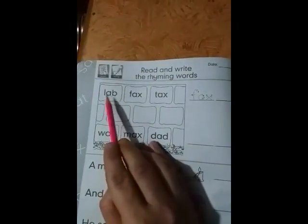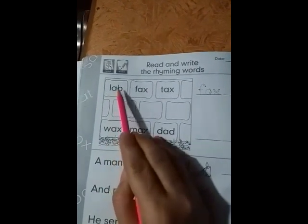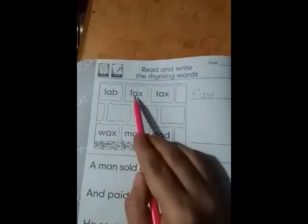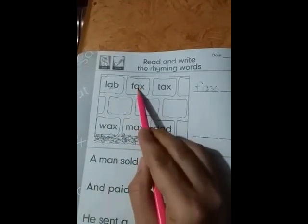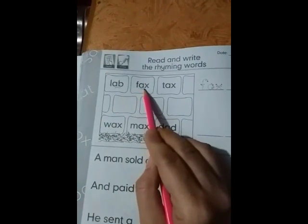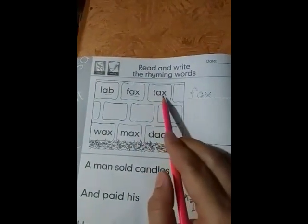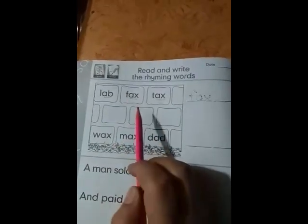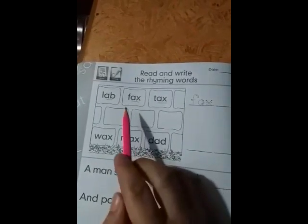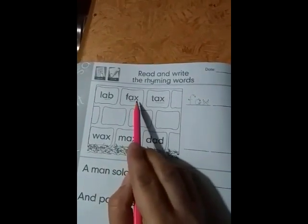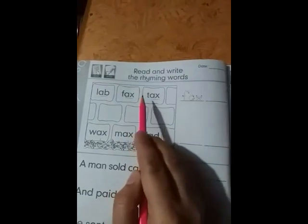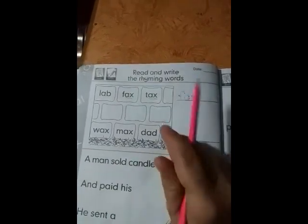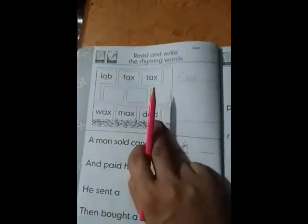For example, there are three words: lab, lab. Its rhyming word is ab. Good. And the second is of fax, fax. Its rhyming word is ax. And the third is tax, tax. Its rhyming word is ax. Now choose the same rhyming words which have, good, ax, fax, two ax, tax. These are same rhyming words. Now we will write these two words on this line. Okay, you will solve this question on this pattern.